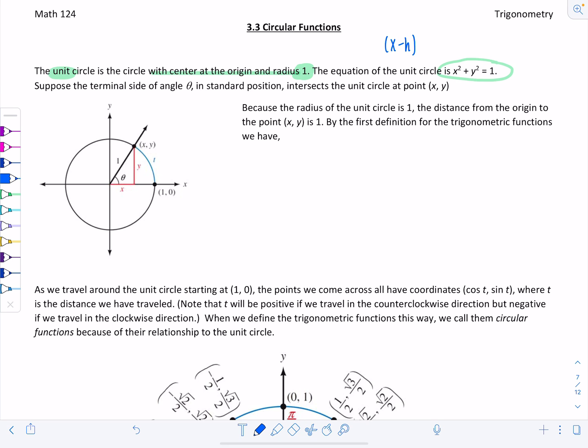Remember circles have the form x minus h squared plus y minus k squared equals r squared, where h, k is the center. Since the center is 0, 0, we just have x squared plus y squared and the radius is 1.